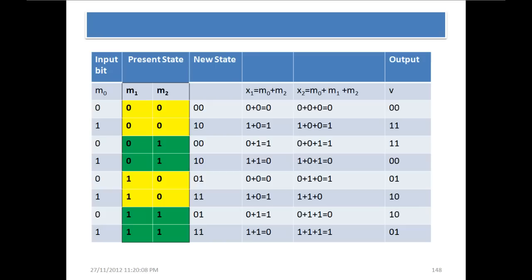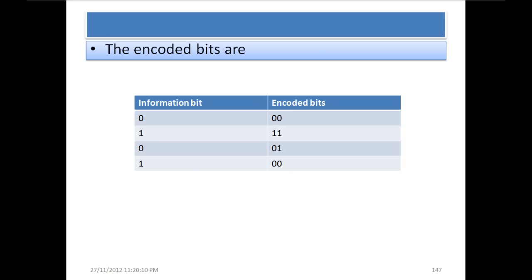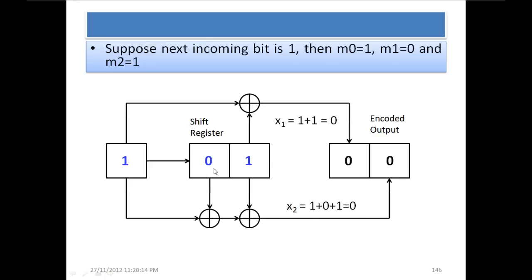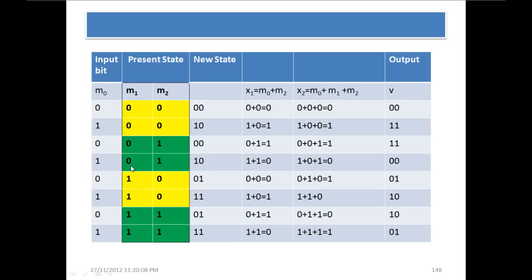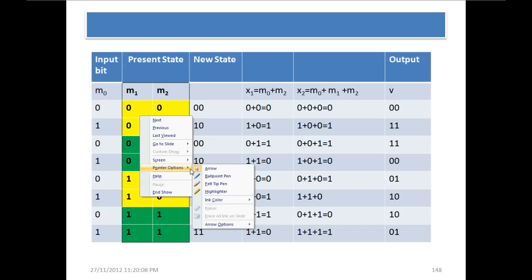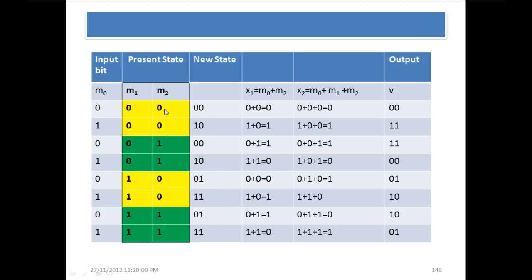We are going to show the different states of shift registers and what the output will be for a given input. Starting from state 00: if the values in the shift registers are 0 and 0 and the input bit is 0, then the output will be 00 and the new state will be 00.